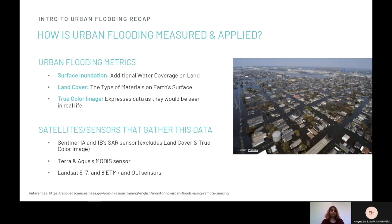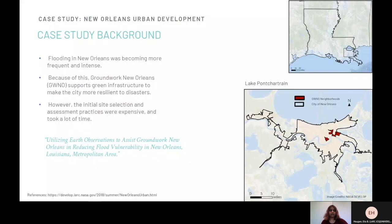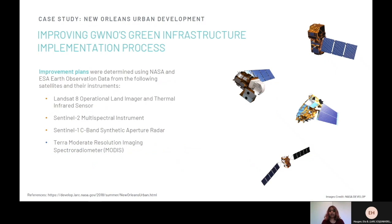Now let's go into the case study from NASA's developed program titled New Orleans Urban Development: Utilizing Earth's Observations to Assist Groundwork New Orleans in Reducing Flood Vulnerability in the New Orleans, Louisiana Metropolitan Area. New Orleans, Louisiana has seen rising sea levels and land subsidence, causing flooding in the city to become more frequent and intense. In response, Groundwork New Orleans is focusing on supporting green infrastructure to make the city more resilient to disasters. However, the initial site selection and assessment practices were inexpensive and took a lot of time, and the project used satellite data to support planning for improvements.